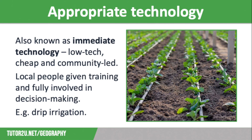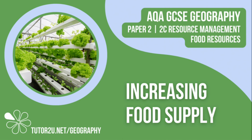Appropriate technology uses machines and tools that are simple and cheap to operate, making it accessible to local communities in low-income countries. This approach increases output and food production without putting people out of work, which mechanisation often does. However, as it is small-scale, it won't increase food supply as much as some other strategies. That concludes this Tutor2U topic video focusing on increasing food supply. Thank you for watching.